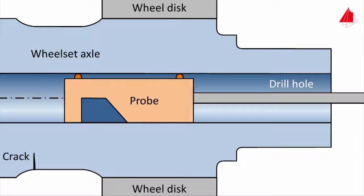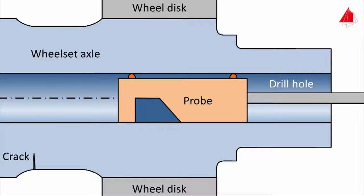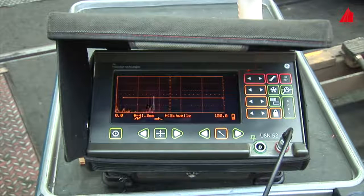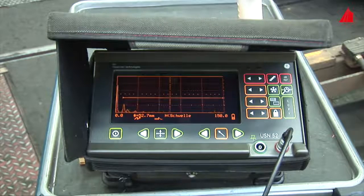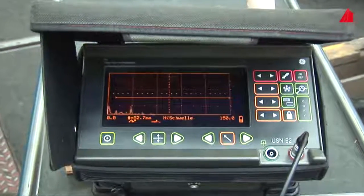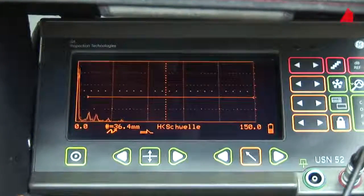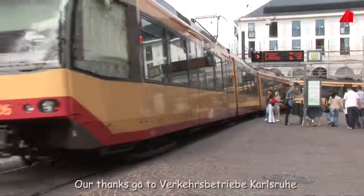It is important to note that also the shape of the wheel set axle may lead to an echo, for example at shoulders. These are so-called contour echoes. In this particular case, only contour echoes are recorded—no abnormality has been detected. The wheel set axle is perfect and can be used again to transport many passengers until the next examination becomes due.